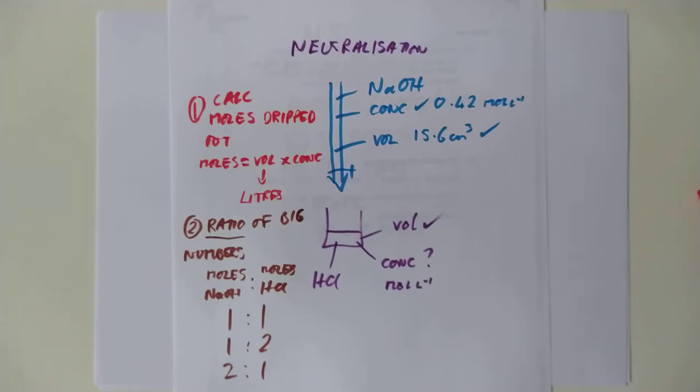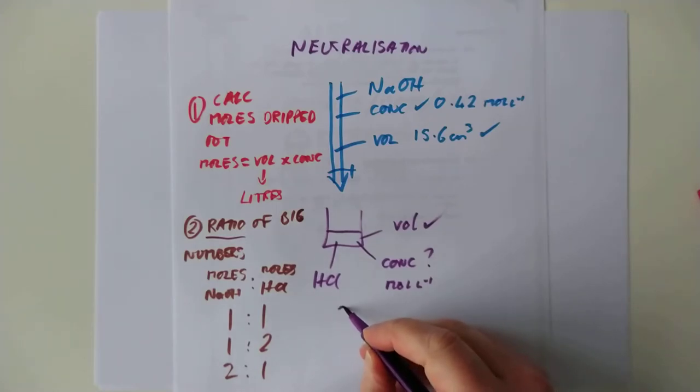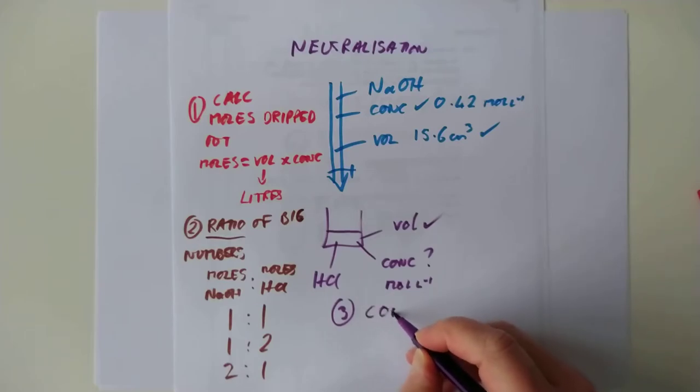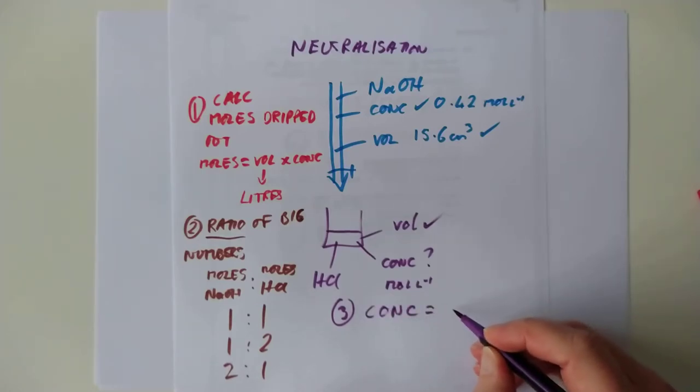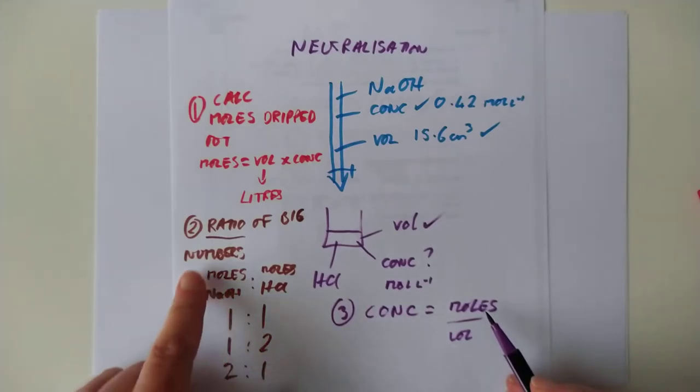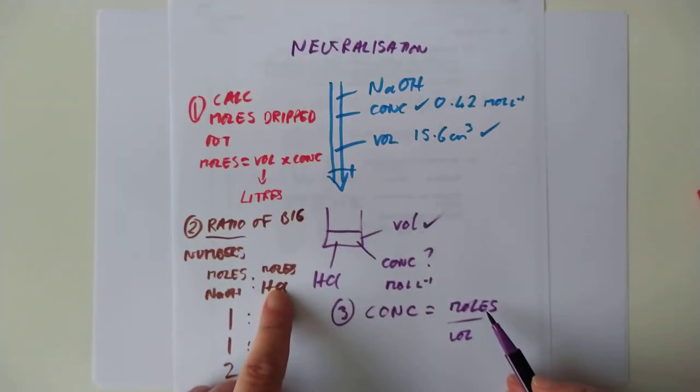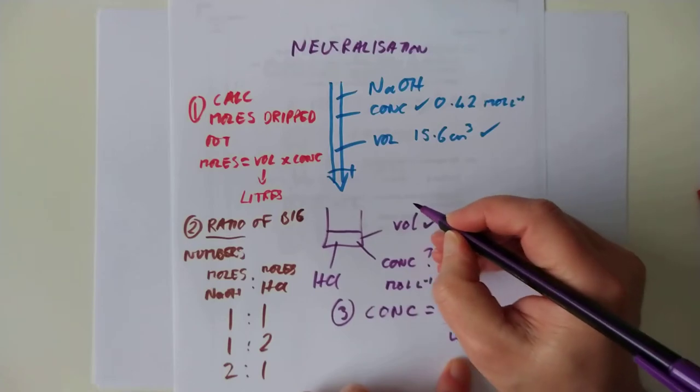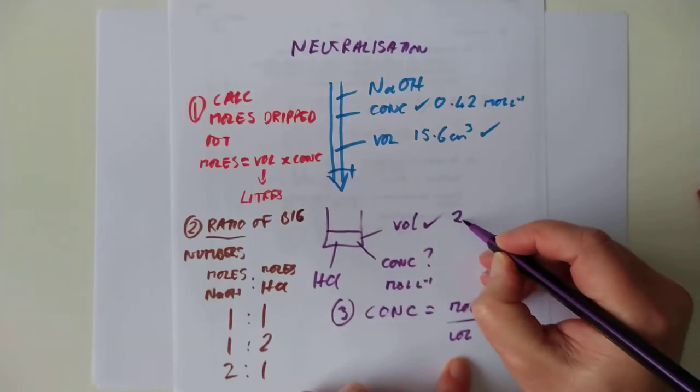And what that will do is it will give you the moles of sodium hydroxide, which you currently know, because you just worked it out here. And it will give you the ratio between that and the moles of hydrochloric acid. Stage one calculated the moles that dripped out of here. Stage two, if you look at the ratio, it lets you tell how many moles are in the bottom beaker. Almost always a national five, it's one to one. Not necessarily, though. It can be one to two or two to one. Third stage. Third and last stage is to do with the bottom beaker.